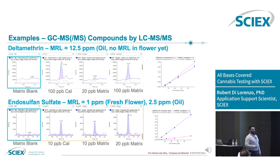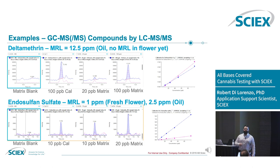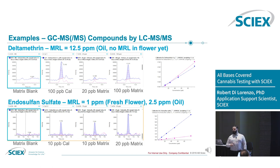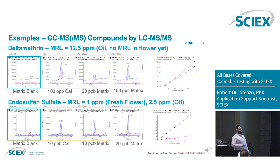What about compounds traditionally analyzed by GC-MS or GC-MS/MS? Deltamethrin, regulated at 12.5 ppb — we can see it down to about 100 ppb in the matrix at LOQ, maybe 10–20 ppb as an LOD. Endosulfan sulfate, regulated at 1 ppm — we can see it a hundred-fold lower in the matrix. Again, we're leveraging our instrument sensitivity, so we don't have to do as much cleanup because we can dilute out a lot of that matrix effect.